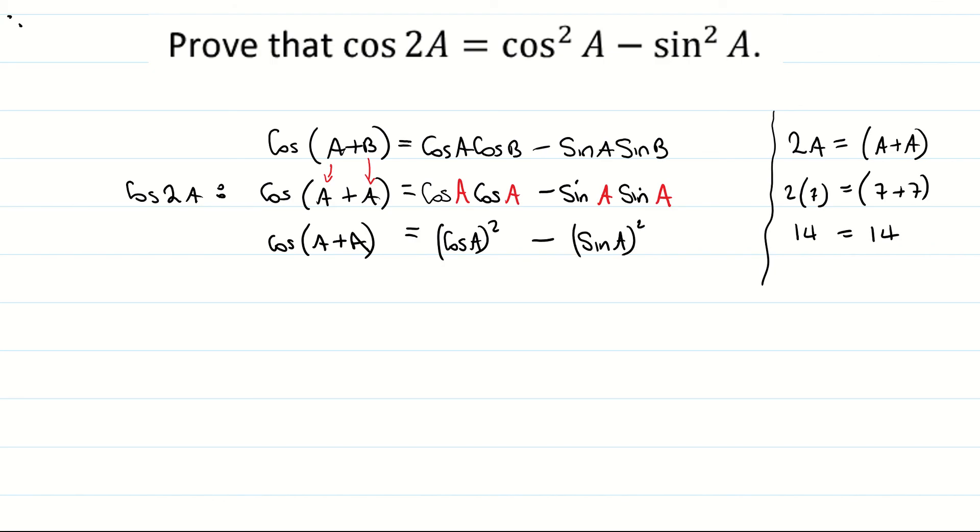Now when we want to write squares in trigonometry we write it as cos squared a, so we put the squared above the cos. That means cos a all to be squared. And sin a squared becomes sin squared a and that's equal to cos a plus a.